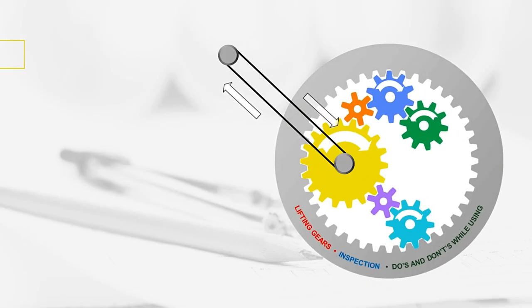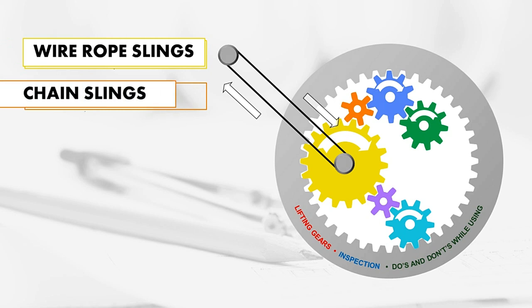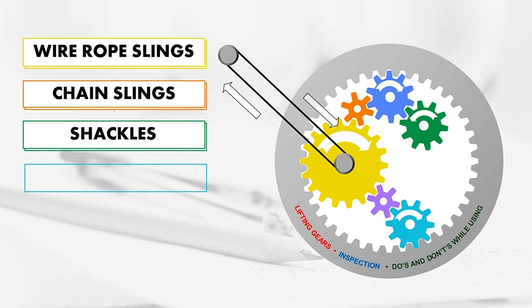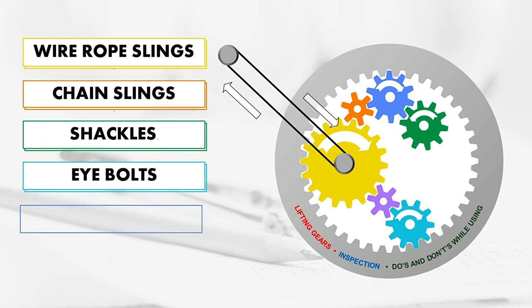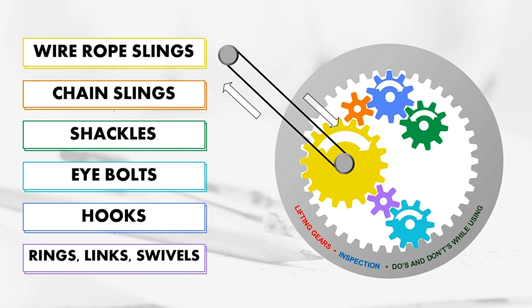Now we look at lifting gears — their inspection and do's and don'ts while using them. The types of lifting gears are: wire rope slings, chain slings, shackles, eye bolts, hooks, rings, links, and swivels.